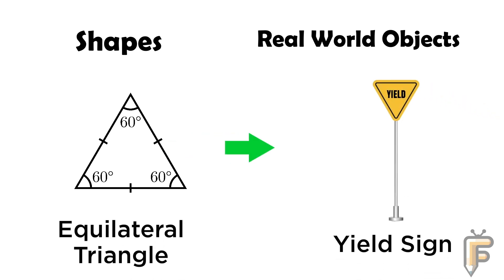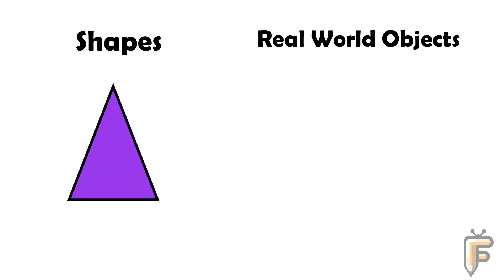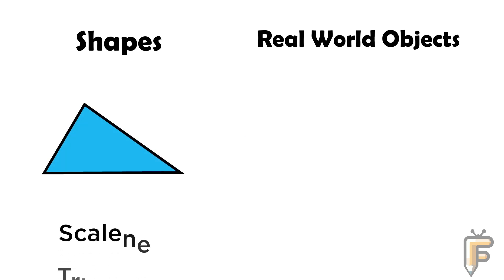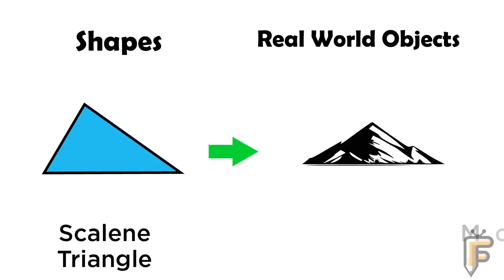Isosceles triangle: slice of pizza is isosceles triangle shape. Scalene triangle: mountain peak silhouette is scalene triangle shape.